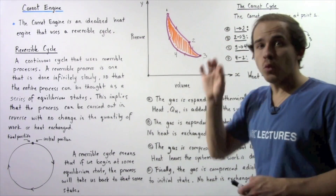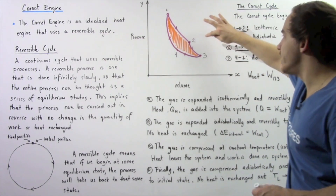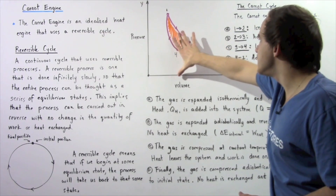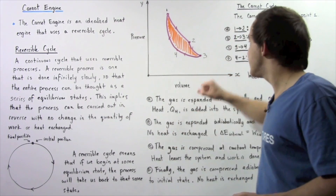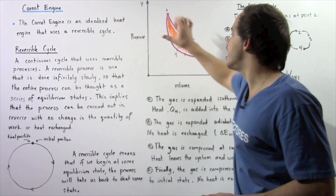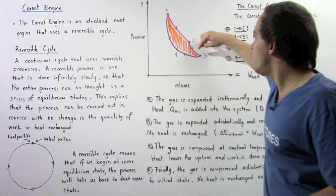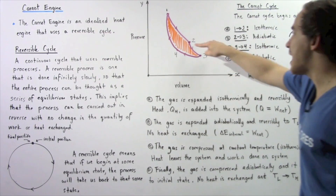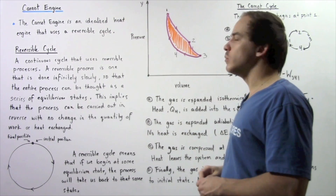The work done going from point one to point two to point three is given by the integral of the upper curve, and the work going from three back to four and back to one is the integral of the lower region. Taking the sum of those two regions gives the orange shaded enclosed area, which represents the net work done in going from point one all the way around and back to point one.